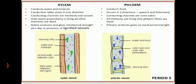In phloem, conduction occurs in two directions. If food is prepared in a leaf located at the central region of the plant, that food will be translocated to the upper tip as well as the lower tip of the plant. Food moves in both directions because all parts of the plant need food. That is why phloem transportation — the translocation of food — is bi-directional.